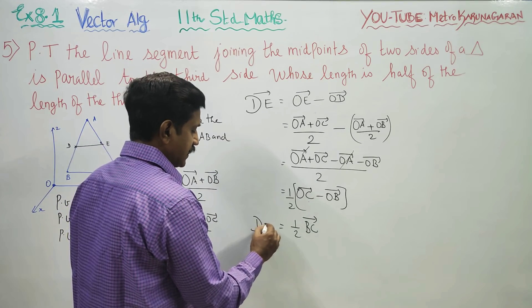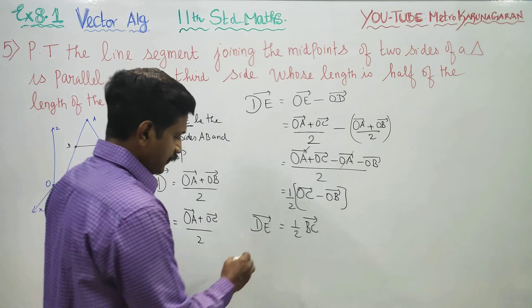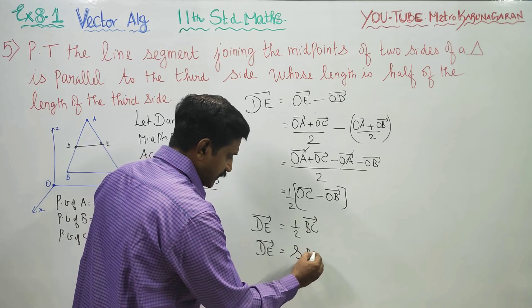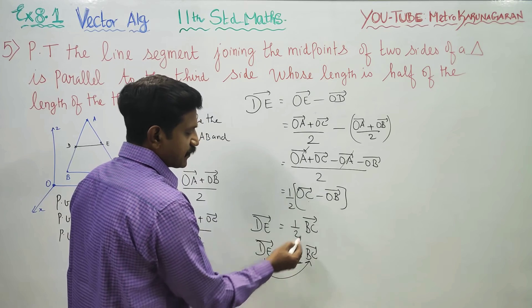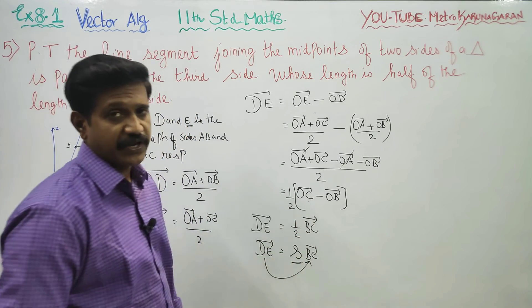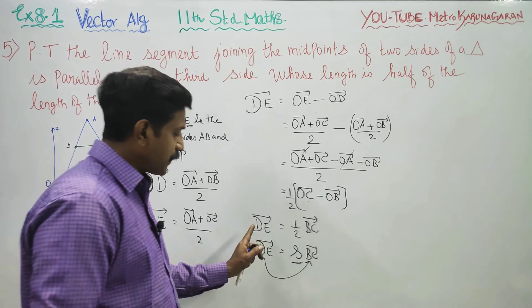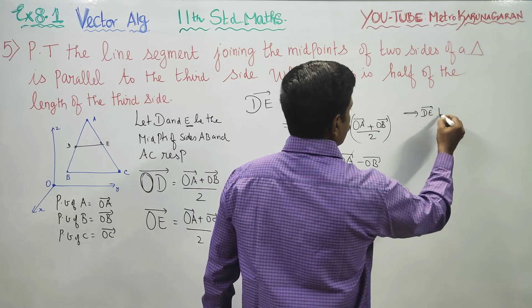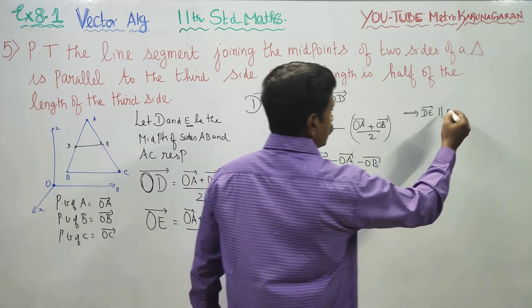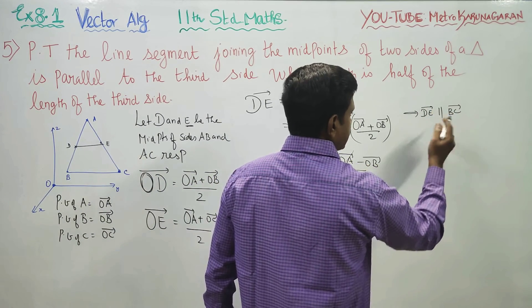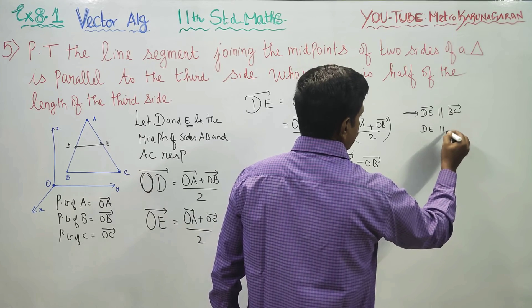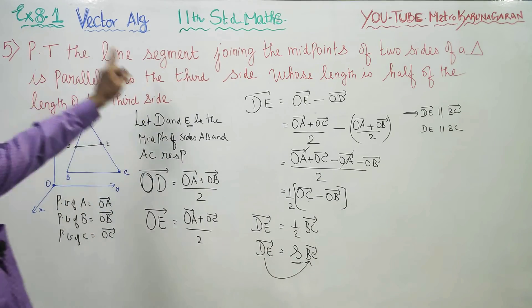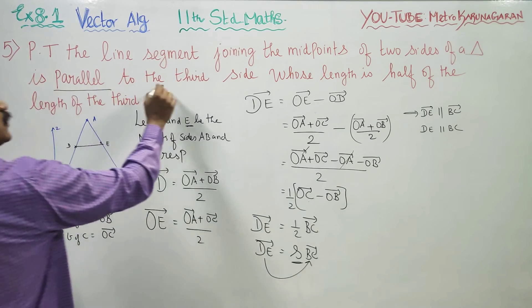I started with DE vector. If one vector is expressed as a scalar multiple of another vector — some number multiplied by another vector — this implies these two vectors are parallel. Therefore DE vector is parallel to BC vector, or the line segment DE is parallel to BC.